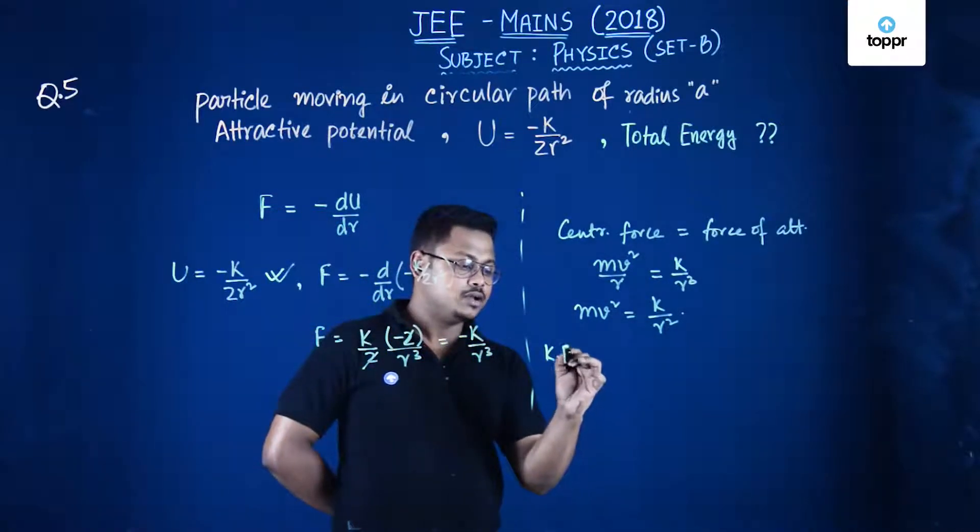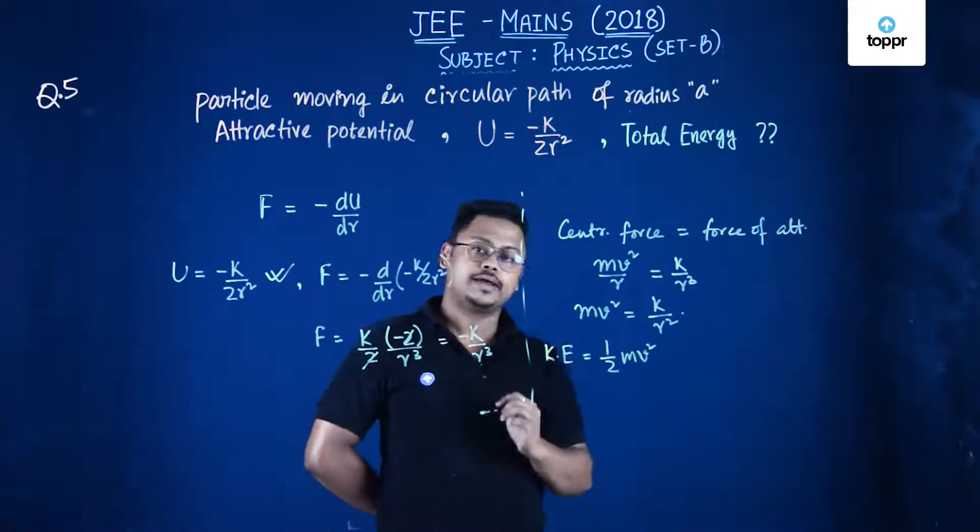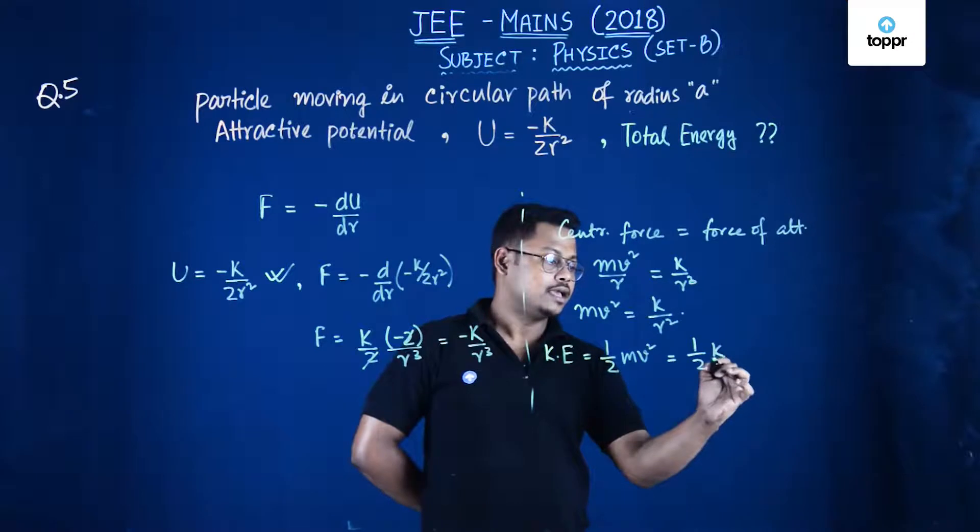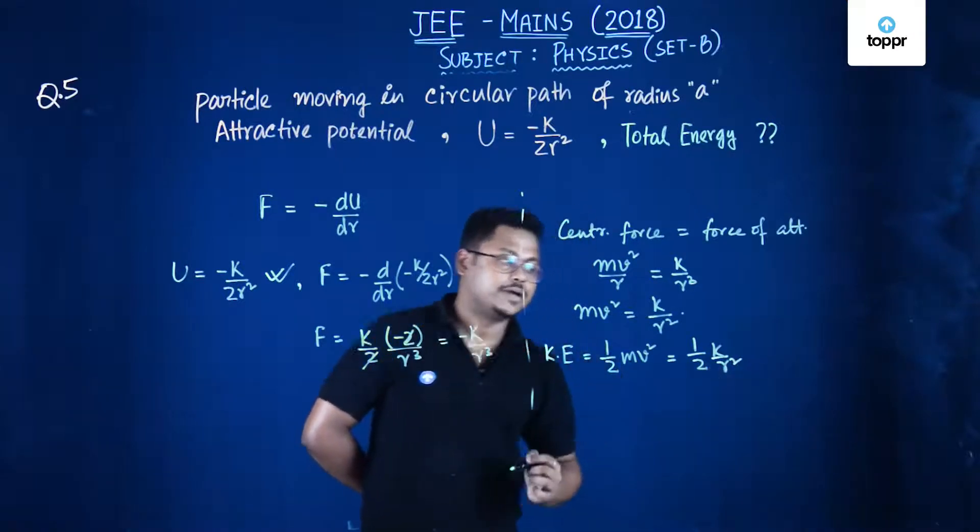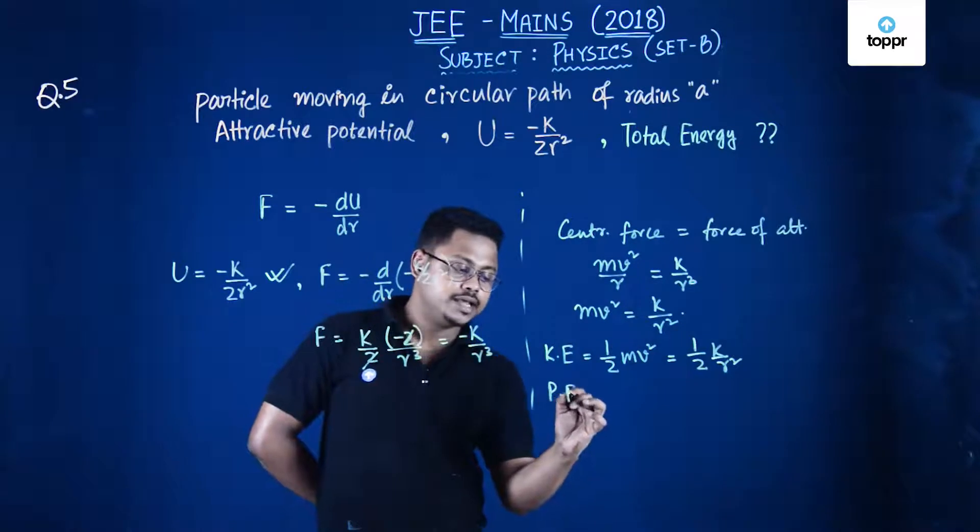Kinetic energy K equals half of mass into velocity square which equals half of k divided by r square. And potential energy is already given.